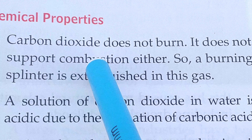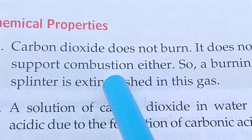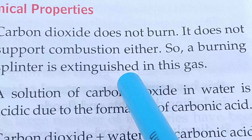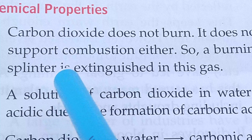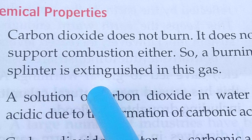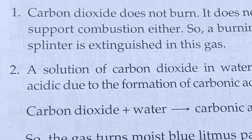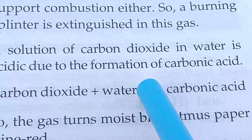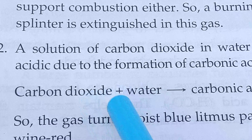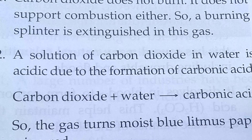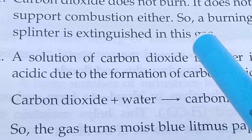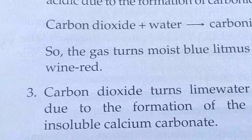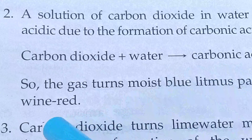Chemical properties: Carbon dioxide does not burn and it does not support combustion. So a burning splinter is extinguished in this gas. A solution of carbon dioxide in water is acidic due to the formation of carbonic acid. Carbon dioxide plus water forms carbonic acid — it is a weak acid. So when carbon dioxide dissolves in water, it produces carbonic acid.